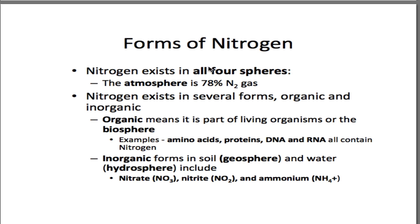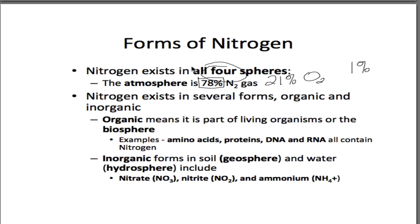Now, forms of nitrogen. It's important that you know nitrogen is in all four spheres. We're going to start with the atmosphere: 78% of our atmosphere is N2 nitrogen gas. The other 21% is O2 — oxygen that we breathe. That leaves 1% for everything else. So 99% of our atmosphere is either nitrogen or oxygen. Nitrogen does exist in a couple different forms: N2, NH3, NO3, and so on. We can break it down into either organic or inorganic.